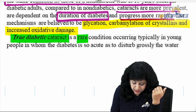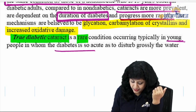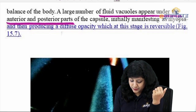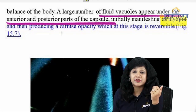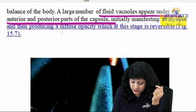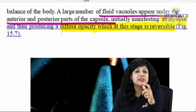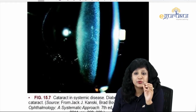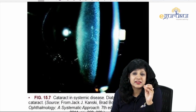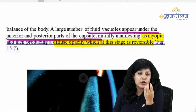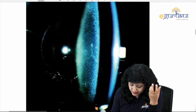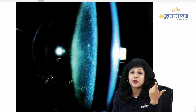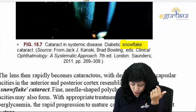True diabetic cataract typically occurs in young people with diabetes. A large number of fluid vacuoles appear under the anterior and posterior capsule, first manifesting as myopia and then producing diffuse opacity — at this stage it is reversible. Small fluid vacuoles give a typical snowflake kind of appearance, which is why it is called the snowflake cataract.